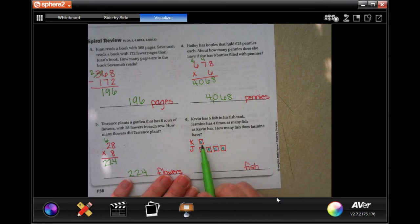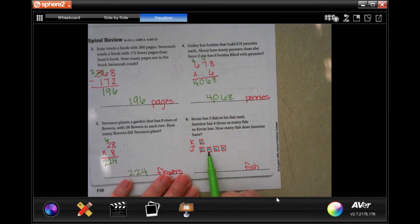Kevin has five fish in his tank. Jasmine has four times that. How many fish does Jasmine have? Well, just count by five, four times. Five, 10, 15, 20. Twenty fish.